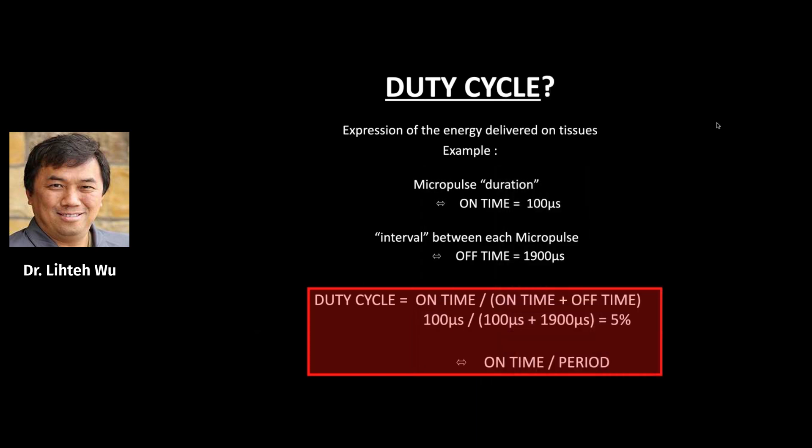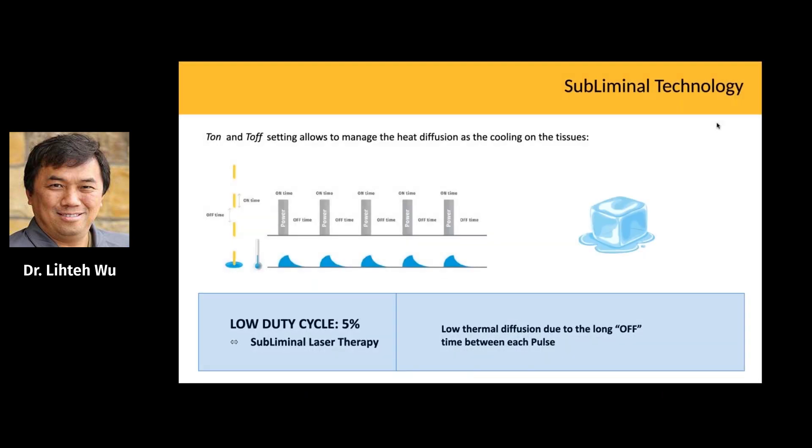In order to do so, we need to define the duty cycle. If we use a 5% duty cycle, it means that when we fire the laser, it will be firing only 5% of the time, and 95% of the time the laser will be off. This off time allows the tissue to cool down and prevents the spread of heat in the vertical and horizontal direction. This low thermal diffusion due to the long off time between each pulse is the essence of the subliminal technology.